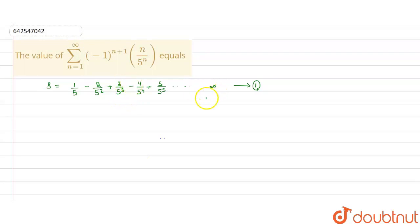We will write it as an APGP. So in APGP, what we do is multiply S with the common ratio.